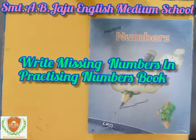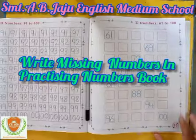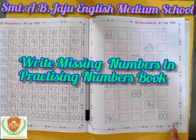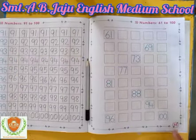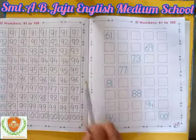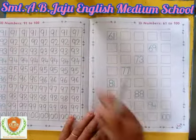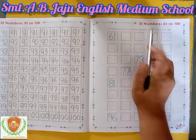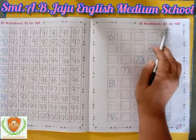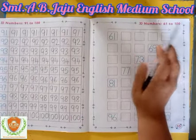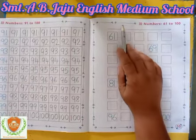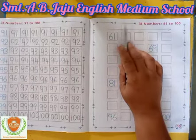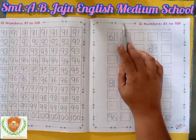Now open the book to page number 35. Here numbers 61 to 100 are given, and you have to write today's date on the top.